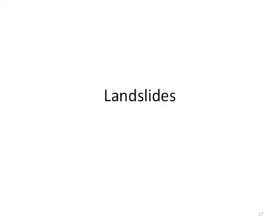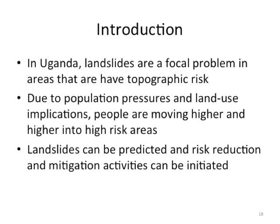In Uganda, as an example, landslides are a focal problem in areas that have topographic risk. Due to population pressures and land use implications, people are moving higher and higher into high risk areas. Landslides can be predicted, and risk reduction and mitigation activities can be initiated.